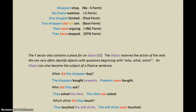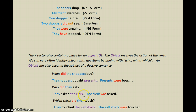For example: 'What did the shoppers buy? The shoppers bought presents.' The shoppers is the subject; bought presents is the Y; the X and M places are empty; bought is the verb; and presents is the object. I could also use the object in a passive sentence: 'Presents were bought' — presents is the subject, were is the X-word, and bought is the verb. 'Who did they ask? They asked the clerk.' They is the subject; asked is the verb; the clerk is the object.